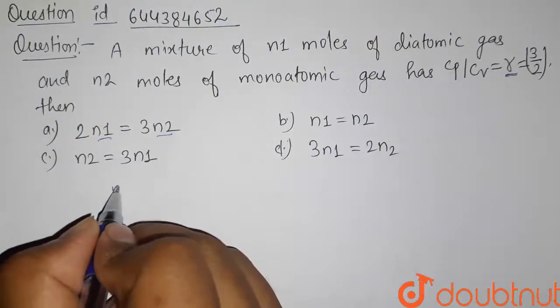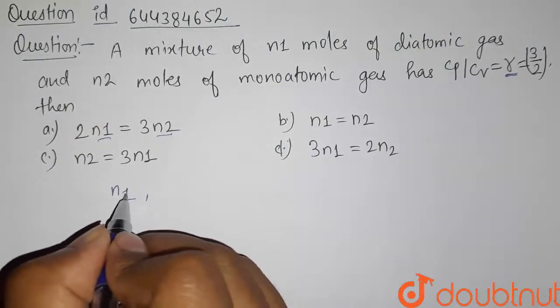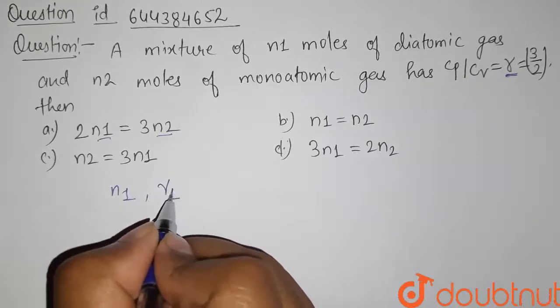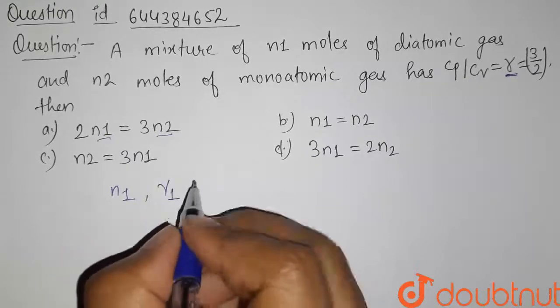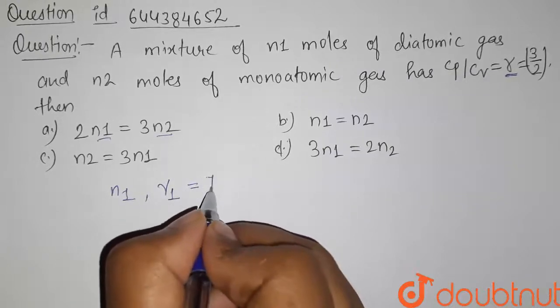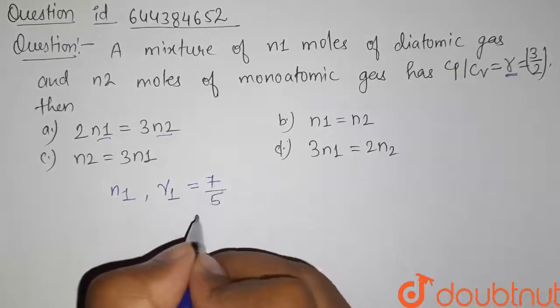So if N1 is the number of moles of diatomic gas, and gamma 1 is the specific heat of diatomic gas, the value for gamma 1 of diatomic gas is given by 7/5.